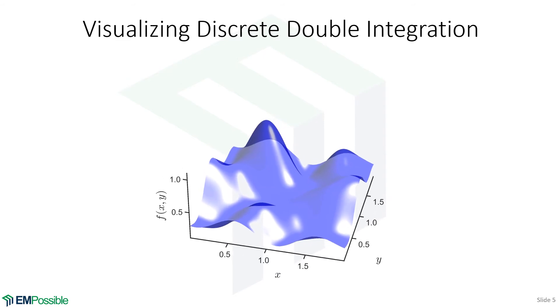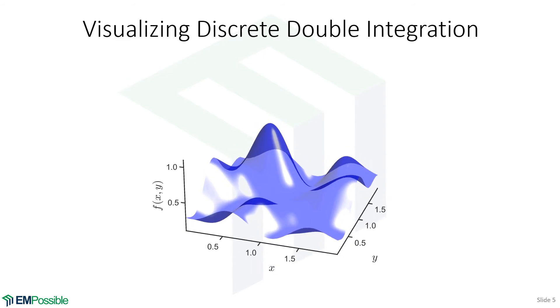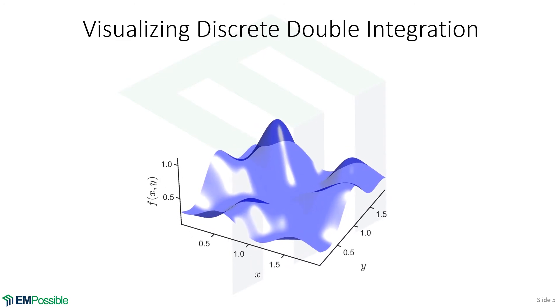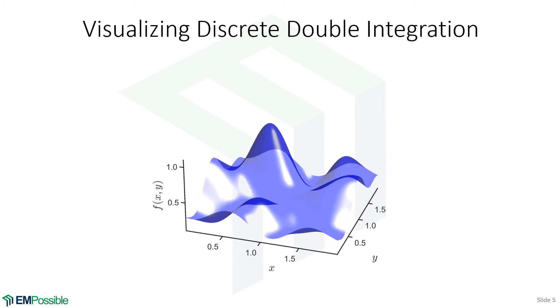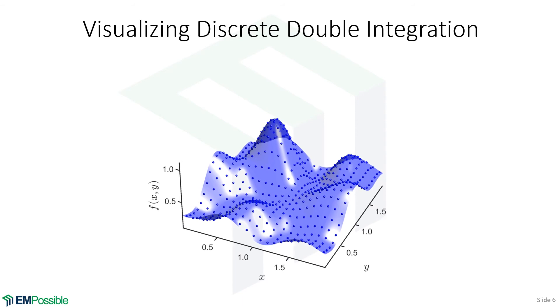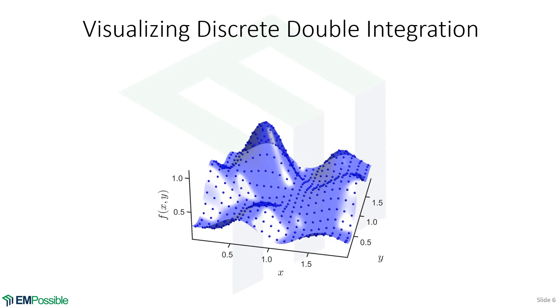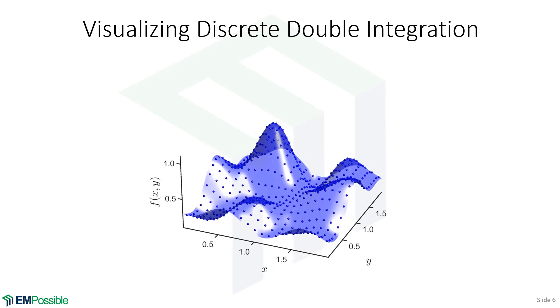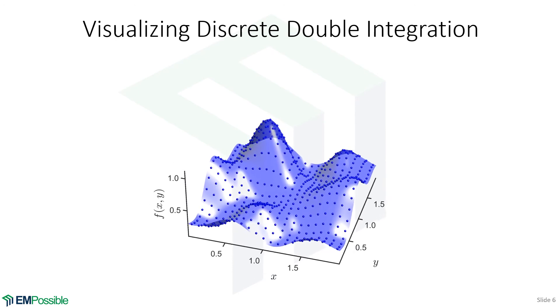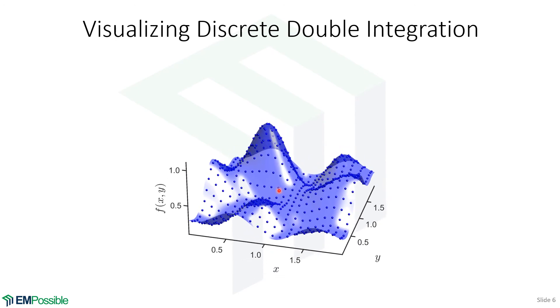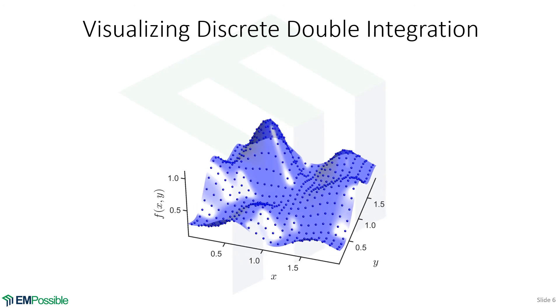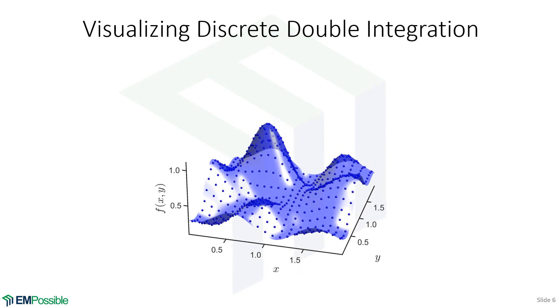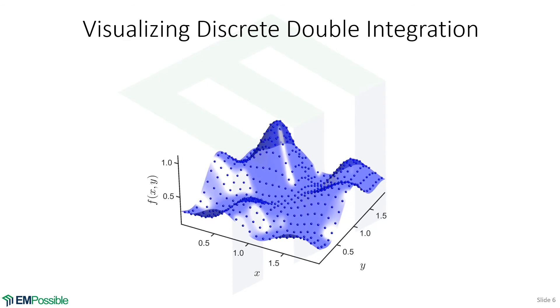Let's try to better visualize this double discrete integration. So we start off with some function, some two-dimensional function of x and y. And it looks something like this. Now, the reality is, we're not storing that continuous function. We're storing a discrete function. We only know that at discrete points. And that's what I'm drawing here with these series of points.